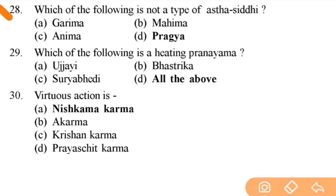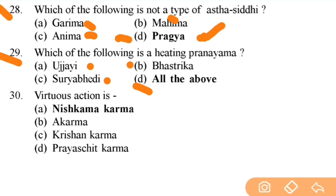Which of the following is not a type of Ashta Siddhi? Right answer is D — Pragya. The rest — Garima, Anima, Mahima — are included in the Ashta Siddhis. Next: which of the following is a heating pranayama? Important — right answer is all of the above: Ujjayi, Bhastrika, Surya Bhedi.